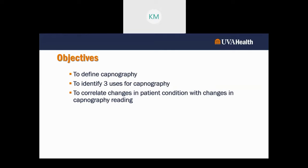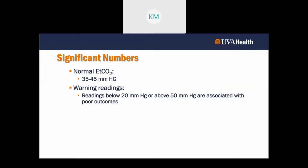Our normal end-tidal CO2 is between 35 to 45. If I see my patient outside that range, check your patient. Are the numbers trending up or down? Is this something expected for this patient? For example, a pregnant patient's normal end-tidal CO2 could be between 26 to 34, which is below the low end of that range, so keep in mind whether this is expected for the patient population.